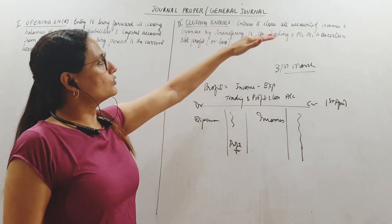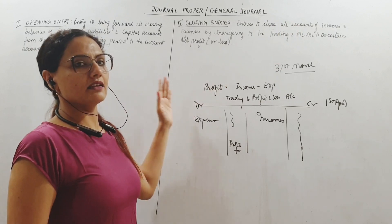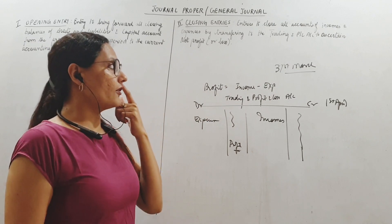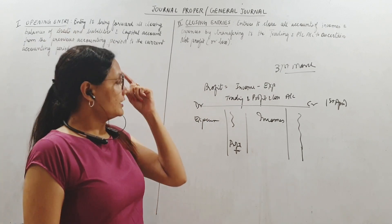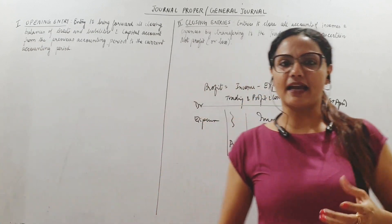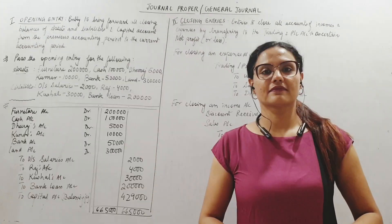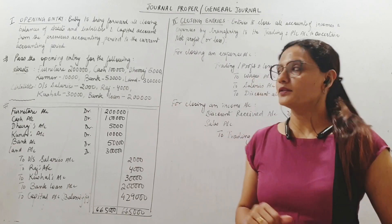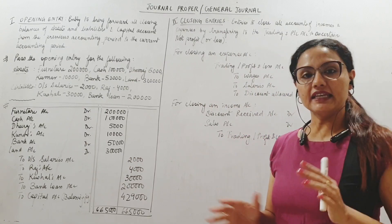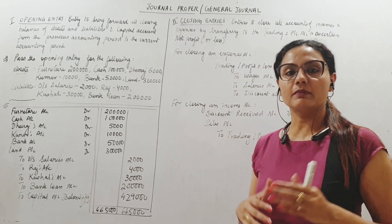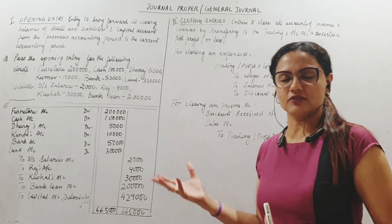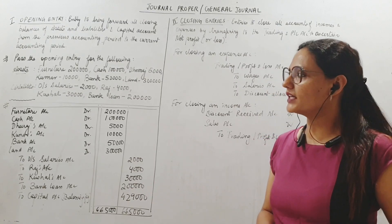Similarly, closing entries are to close all accounts of income and expenses by transferring them to the trading or profit and loss account to ascertain profit or loss. Let us take a few examples so that it is more clear. Here we take an example: Pass the opening entry for the following. You will be given information about the assets and liabilities and based on that you need to find the opening entry.